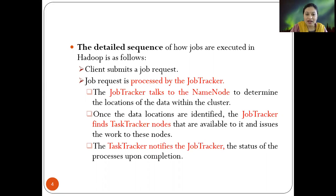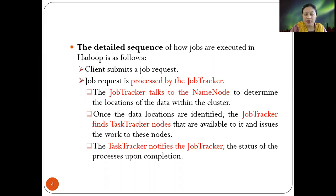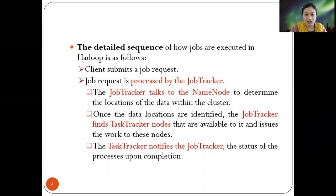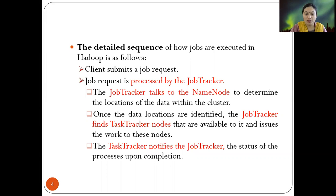First, the client submits a job request as part of the execution. This may be sorting of numbers, a MapReduce job, finding counts of words or IP addresses, or any log file processing. The job request is then processed by the job tracker, which acts as a top-level coordinator.